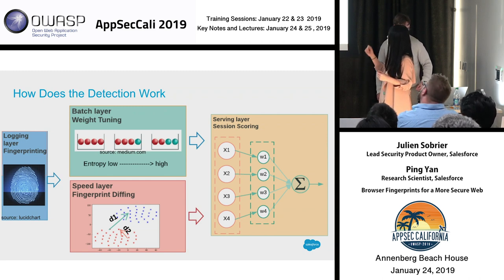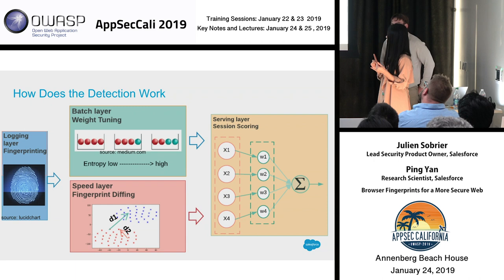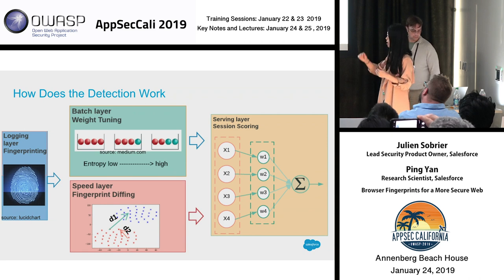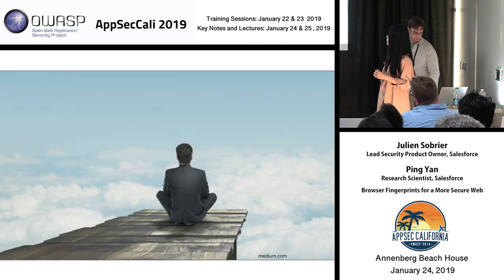We simply calculate the change between fingerprint components for each individual component. With those two sets of parameters — the likelihood of observing a change and the significance or distance of the change — we can rank all our sessions by the suspiciousness of observing a change. It's as simple as a weighted sum, and this way we get rid of most of the false positives.